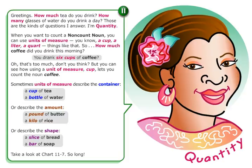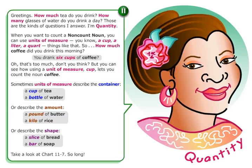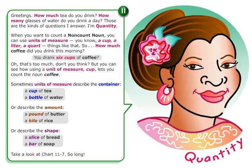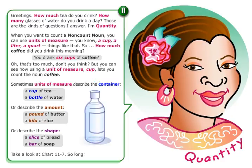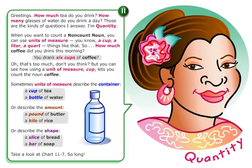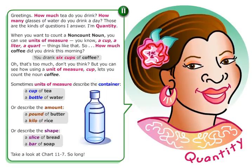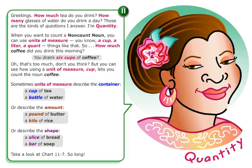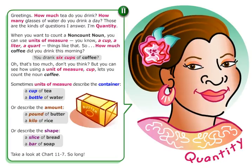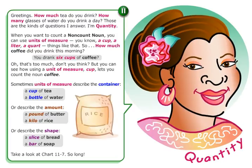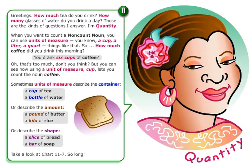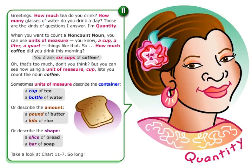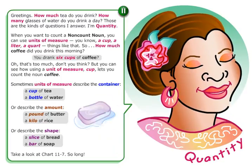Sometimes units of measure describe the container — a cup of tea, a bottle of water — or describe the amount — a pound of butter, a kilo of rice — or describe the shape — a slice of bread, a bar of soap.